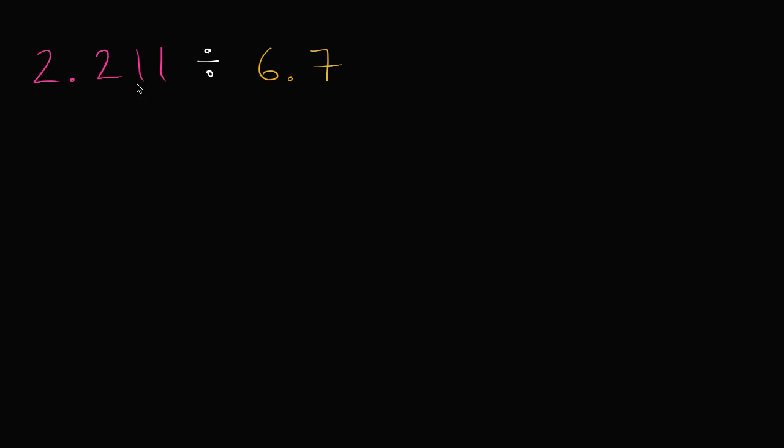Let's figure out what 2.211 divided by 6.7 is. So the first thing I like to do is I don't like to divide by a decimal. So I'm going to multiply 6.7 by 10,